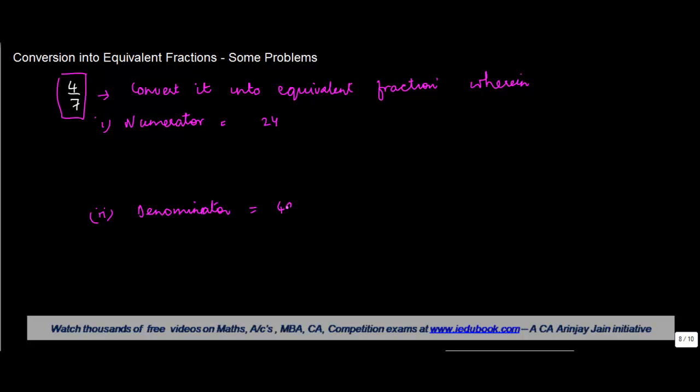Now let's call this equivalent fraction as anything in the form of a upon b. If it is an equivalent fraction of 4/7, then we have 4/7 is equal to a/b, where a is the numerator and b is the denominator.